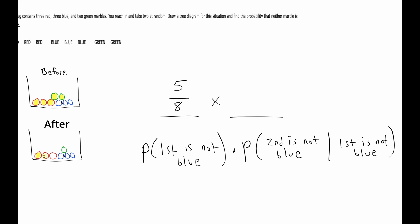Then assuming that we do remove one of those marbles that's not blue, that leaves us with four remaining marbles that are still not blue, but we did take one marble out of the bin so our denominator would be a seven. And so if we multiply this we will get 20 over 56, which reduces to five over 14.